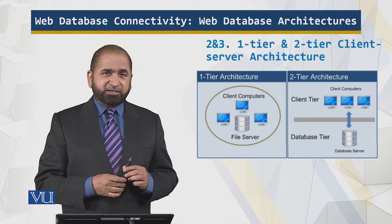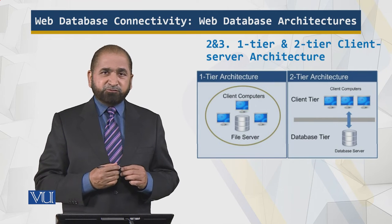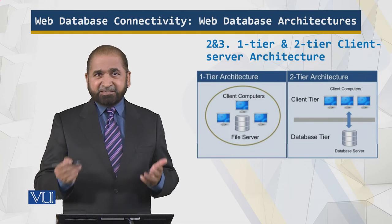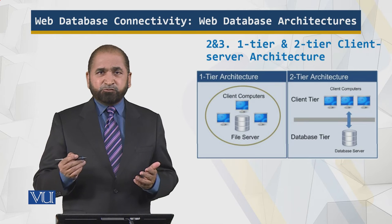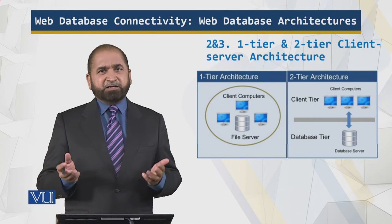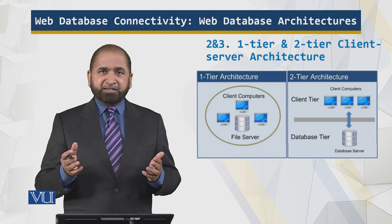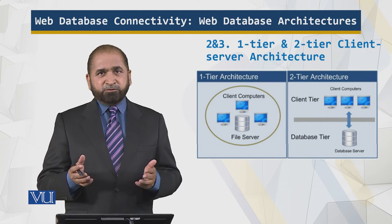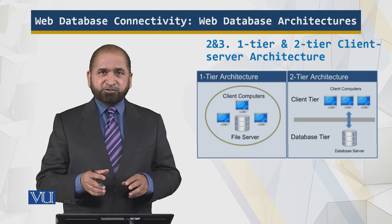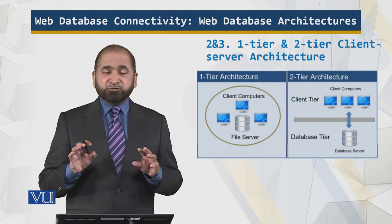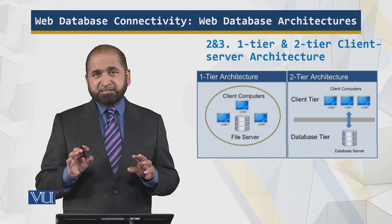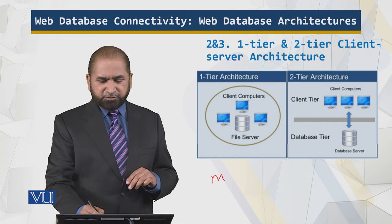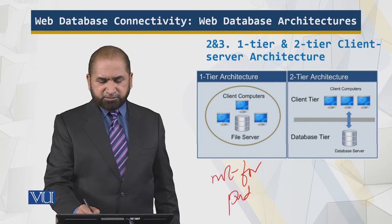We have the one-tier, two-tier, and three-tier architectures. One-tier architecture is when you want to practice SQL — you install a database application on your machine, a laptop or PC, and you run SQL commands on it. That is a one-tier application. It is not used in a production environment.